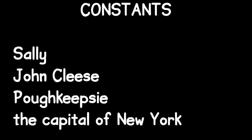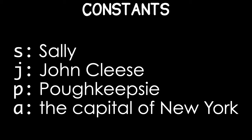Constants are singular terms that pick out individuals. For example: Sally, John Cleese, Poughkeepsie, the capital of New York. In QL, we use lowercase letters. So we might let little s stand for Sally, little j stand for John Cleese, little p be Poughkeepsie, and little a be the capital of New York.